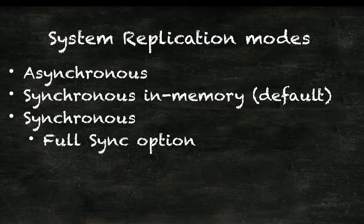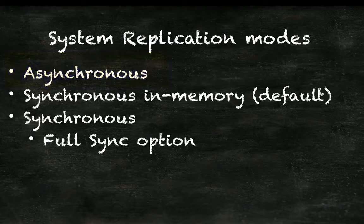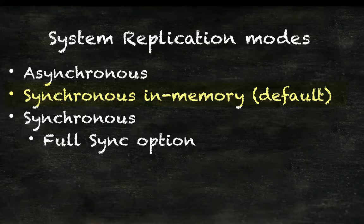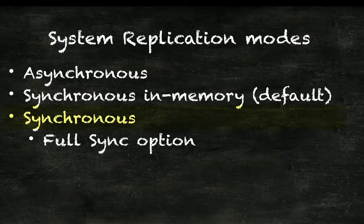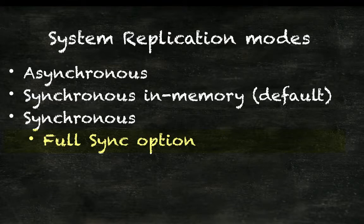Depending on the requirements, there are three modes to choose from. Asynchronous means that the primary system sends the data to the secondary system but does not wait for the data to arrive or to be committed. Synchronous in memory is the default setting — here the primary system commits the transaction after it receives a reply that the log was received by the secondary system. This does not require the data to be persisted to storage on the secondary system, so the transaction delay is shorter. The third option, synchronous, does require persistence and guarantees immediate consistency between both systems. This mode also has the full sync option, which is even more restrictive, as transaction processing is suspended in case of communication failure between the primary and secondary node, guaranteeing no data loss.